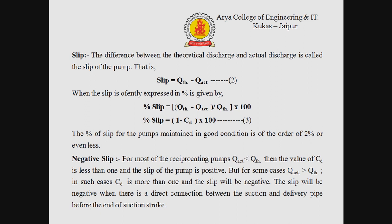Slip: the difference between the theoretical discharge and actual discharge is called the slip of the pump, as shown by equation number 2. Slip is equal to Q theoretical minus Q actual. When expressed in percentage, as given by equation number 3, percentage slip is equal to (1 minus CD) into 100. The percentage slip for a pump maintained in good condition is of the order of 2% or even less.